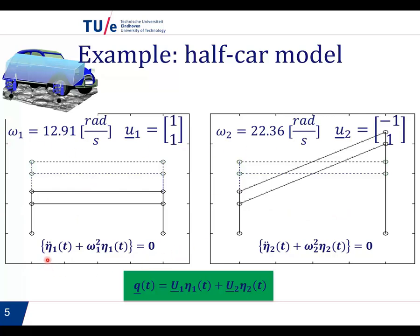For each of the modes, we can write one of these differential equations with omega squared here. Basically, as you see here, the only parameter we need to know in order to solve this equation is what is the eigenfrequency of the mode. And once we have solved this, so we solve for eta 1 and we solve for eta 2, we simply have to combine them by multiplying them by the eigenmodes to obtain the generalized coordinates. But of course, we need some initial conditions.